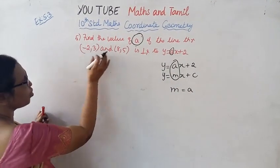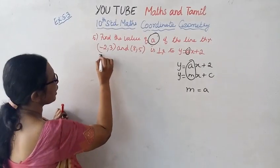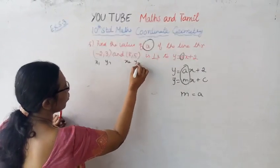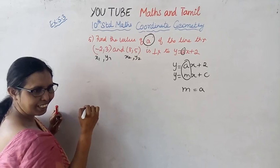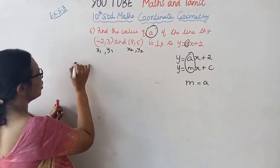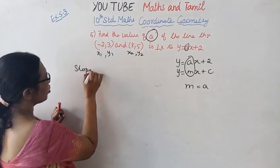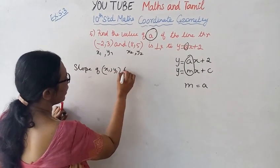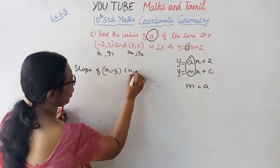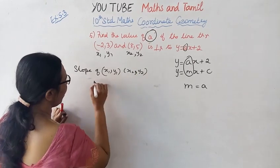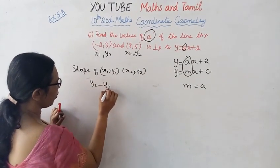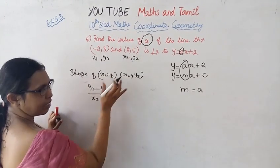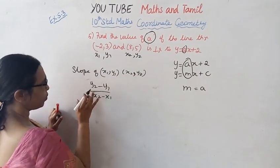Now I am going to draw 2 points: X1, Y1 and X2, Y2. The slope formula for two points is: Y2 minus Y1 divided by X2 minus X1.